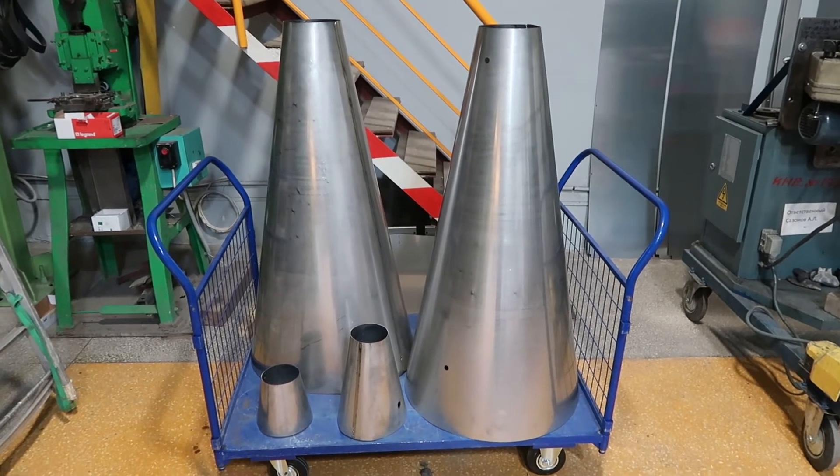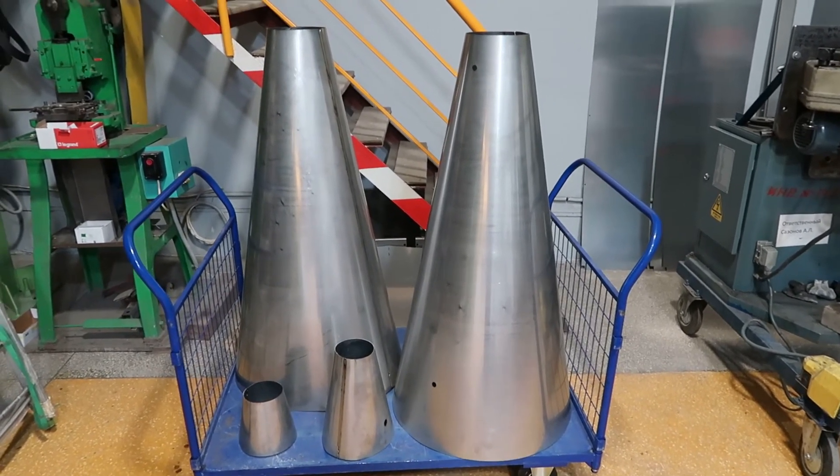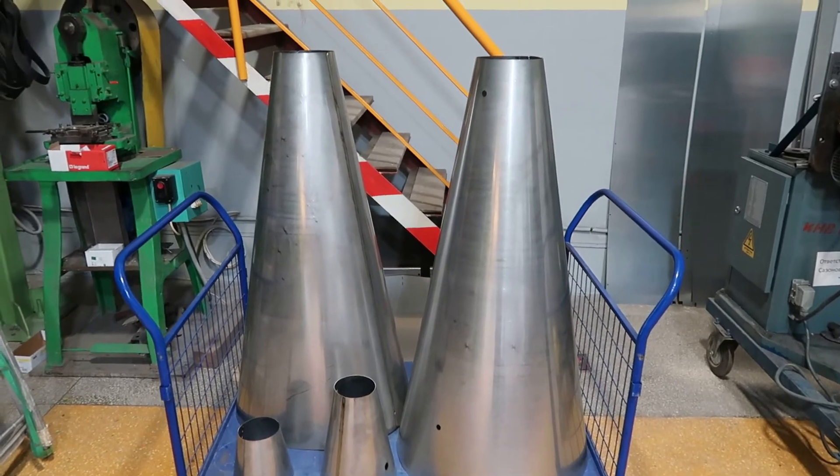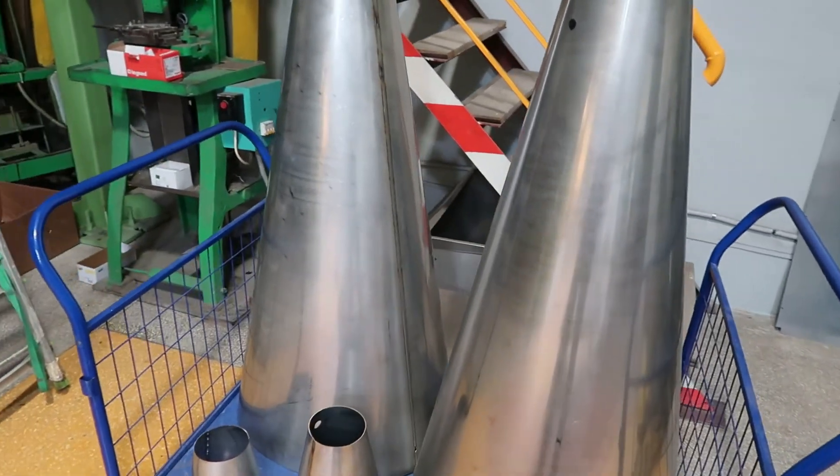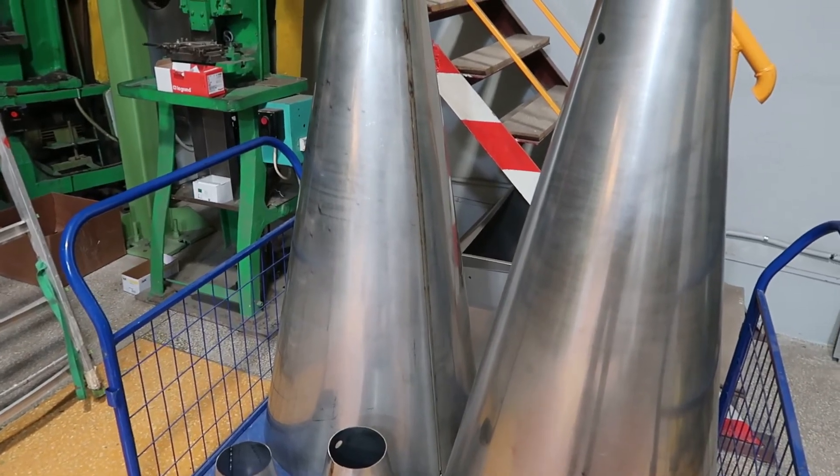Besides, let's have a look at the blanks of oxygen cones. These are parts of OG30 oxygen cones, which are manufactured in batches of several pieces due to the production process specific nature.